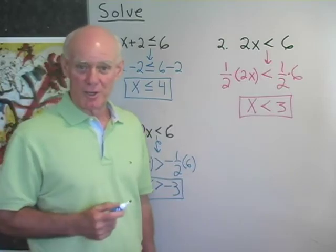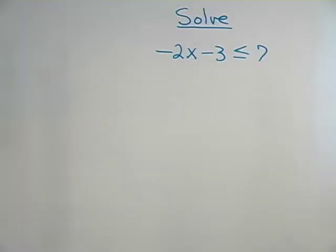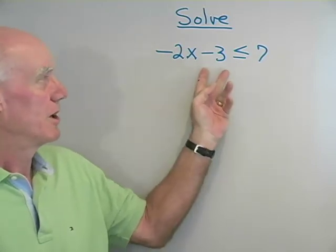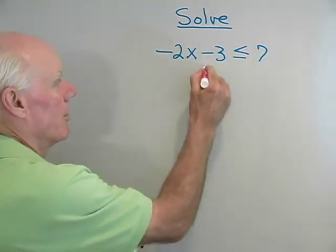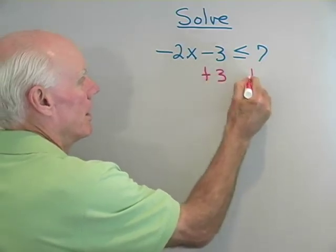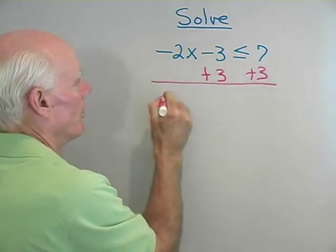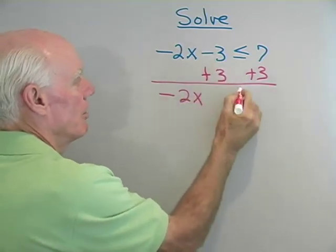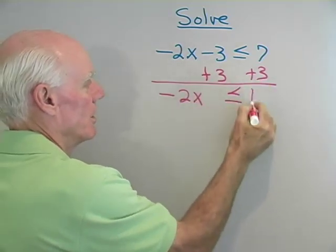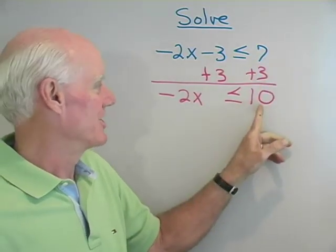Let's go to the next board and work another one of these problems. We want to solve: negative 2x minus 3 is less than or equal to 7. I'm going to start by adding 3 to each term. I'll end up with negative 2x plus 0 less than or equal to 10, since 7 and 3 is 10.